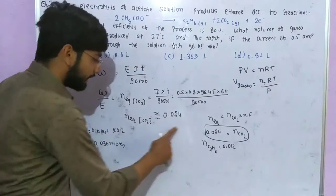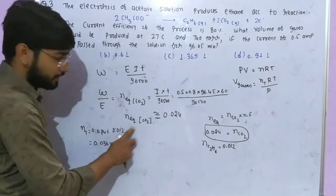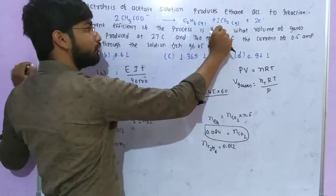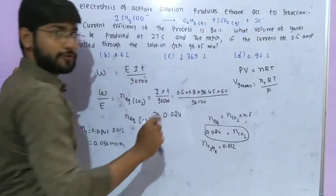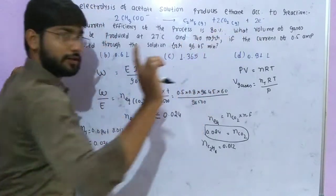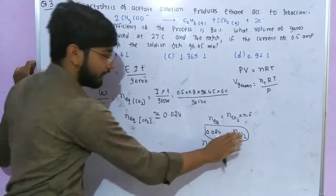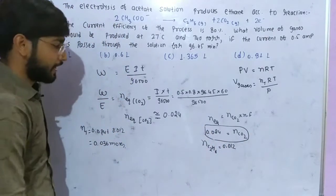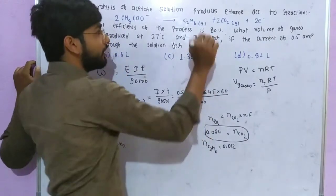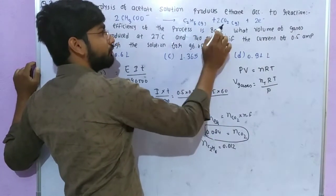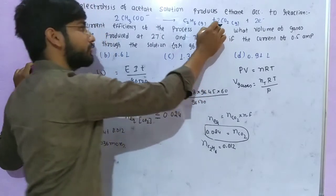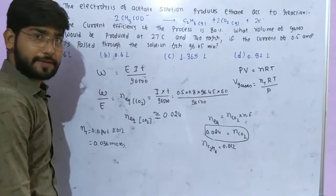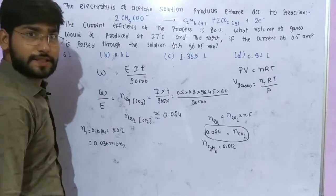Number of equivalents equals number of moles times n-factor. The n-factor for CO2 is 2, giving 0.024 moles which produces 0.012 moles CO2. For ethane, 0.024 divided by 2 gives 0.012 moles ethane produced. Total moles is 0.036.